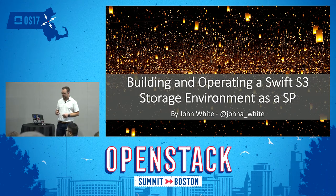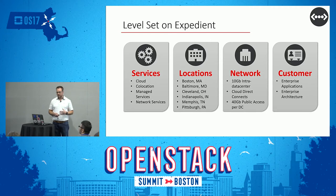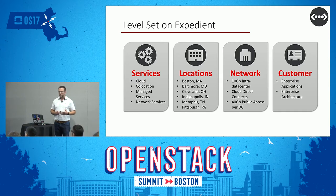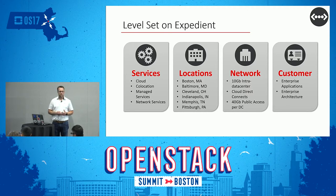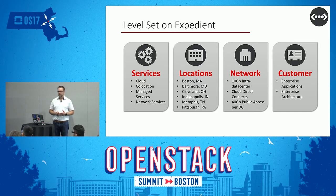To give you some context about who we are: Expedient is a service provider focused on cloud, co-location, and managed services. We operate in seven different markets and have a heavy focus on network — that's where our background came from. All of our data centers are interconnected with 10 gig low-latency fiber, we have cloud direct connects to AWS and Azure, we sit in Equinix POPs so we can connect to pretty much anybody, and we have a lot of public internet access coming into our data centers.